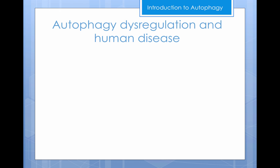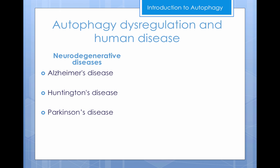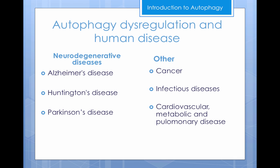Dysregulation of autophagy is associated with several human diseases, including neurodegenerative diseases such as Alzheimer's, Huntington's, or Parkinson's disease. Other diseases such as cancer, infectious diseases, cardiovascular, metabolic, and pulmonary diseases, or even aging, are associated with defects in the autophagy pathway.